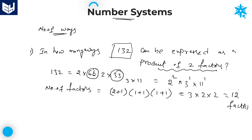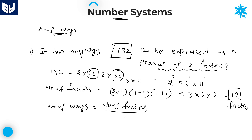Now, if you observe carefully, according to the rule of number of ways: if the number of factors is even — and 12 is an even number — then the number of ways is equal to number of factors divided by 2. Which is equal to 12 divided by 2 = 6 ways. Therefore we can write 132 as a product of two factors in 6 ways. This is the answer.